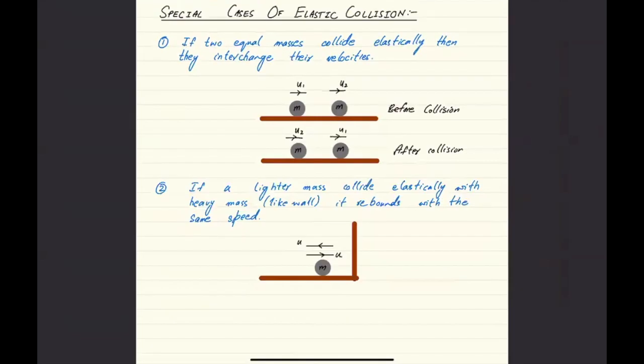Then you have to remember these two special cases of elastic collisions. Please do remember there are certain specific things about it: they have to be equal masses and they have to be colliding elastically. If two equal masses collide elastically, then they interchange their velocities.